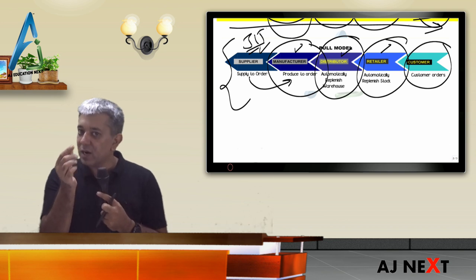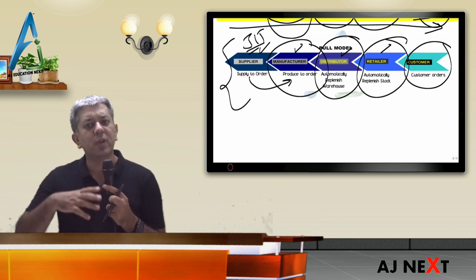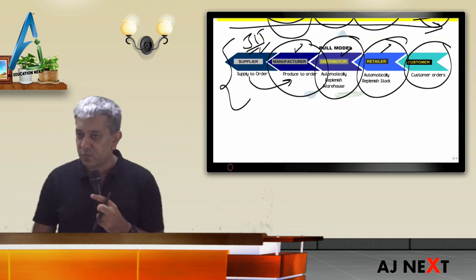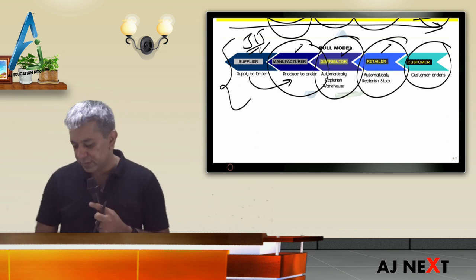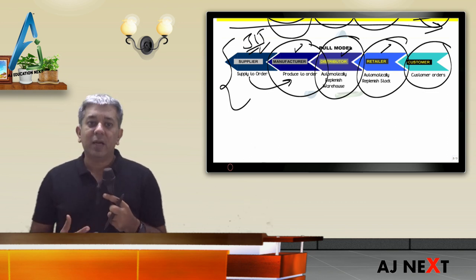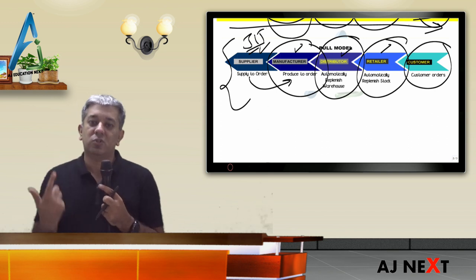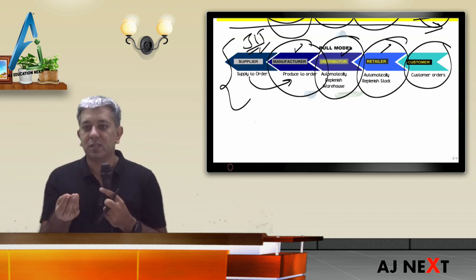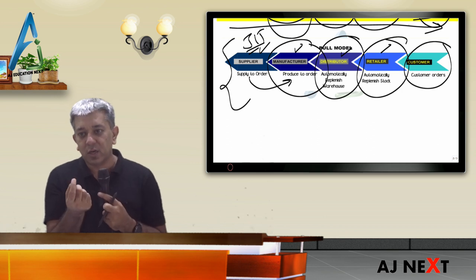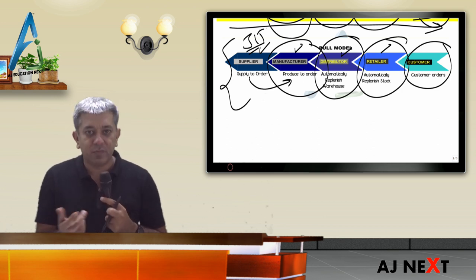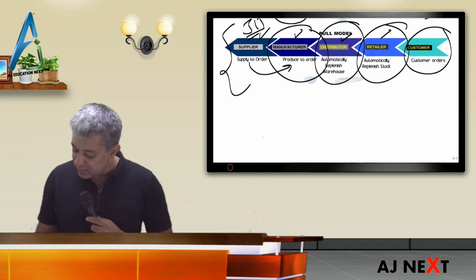As soon as order is at the retailer, it has to go to wholesaler, to manufacturer. Manufacturer has to tell the supplier to send material. All these things will require good systems so that things happen faster. This is the concept of just-in-time system: make things when you need them, don't keep stocks beforehand, and if you do keep them, keep as little as possible.